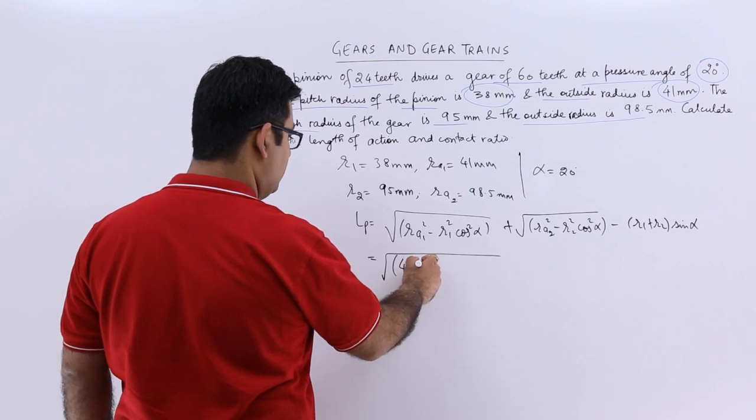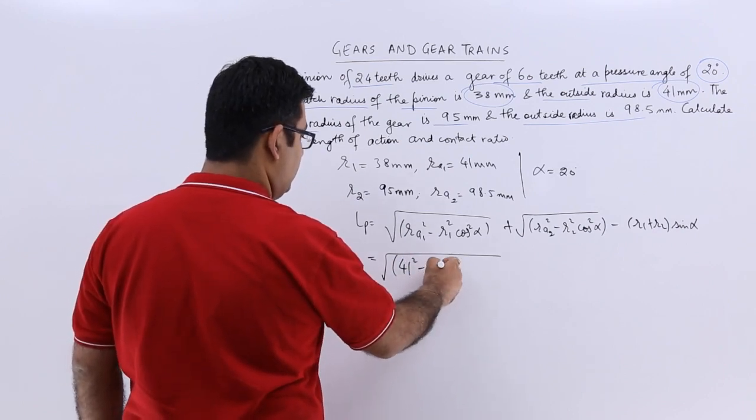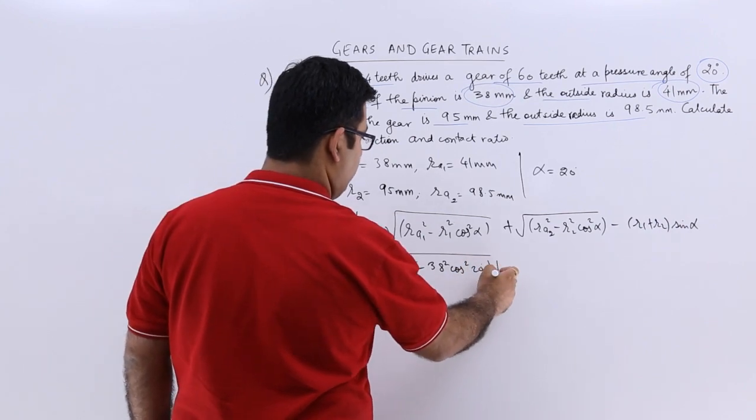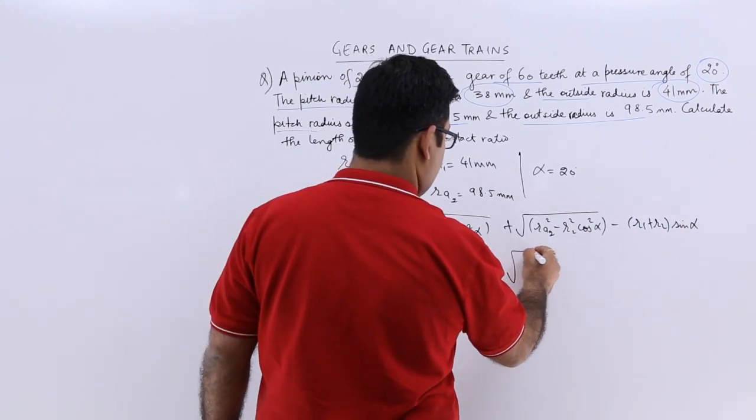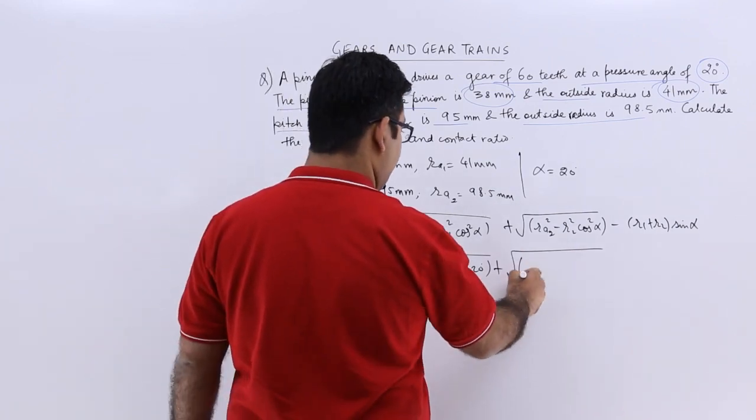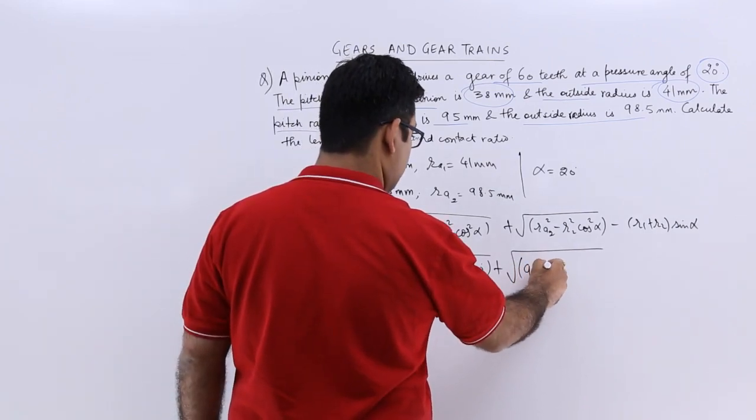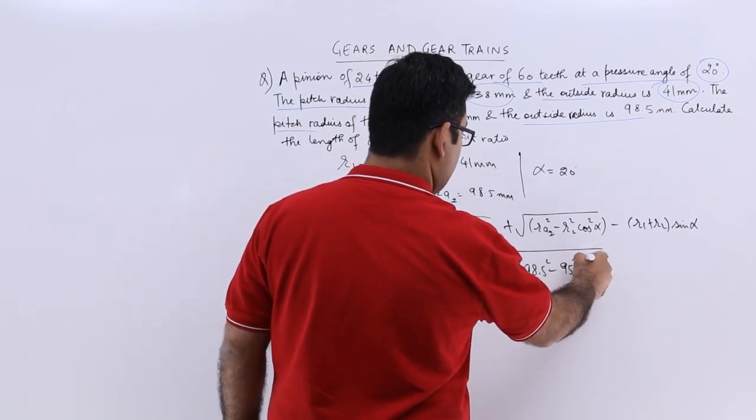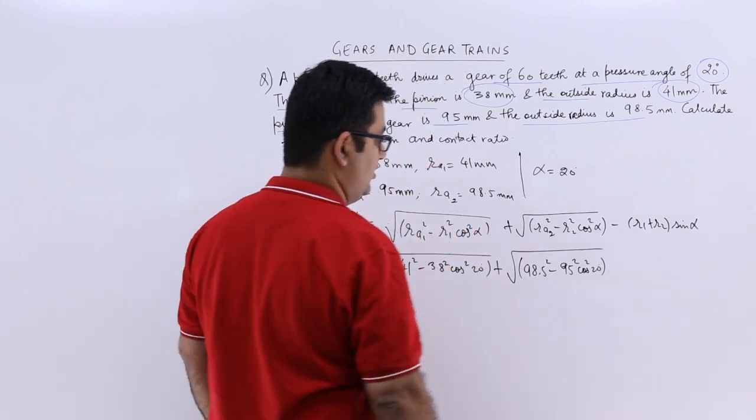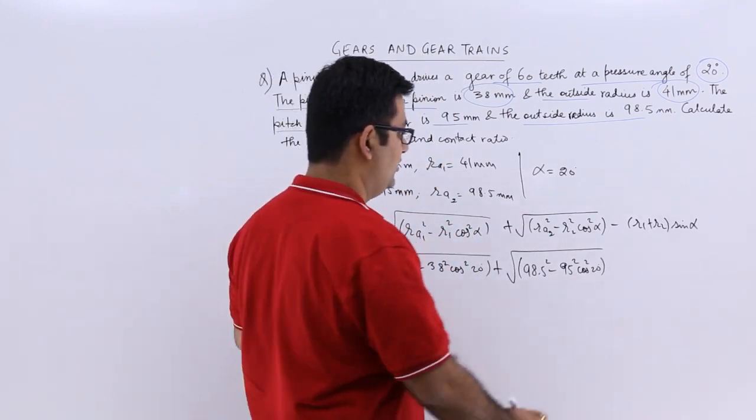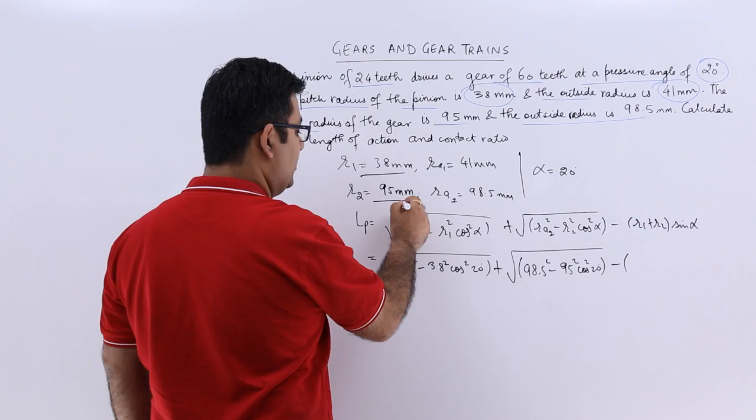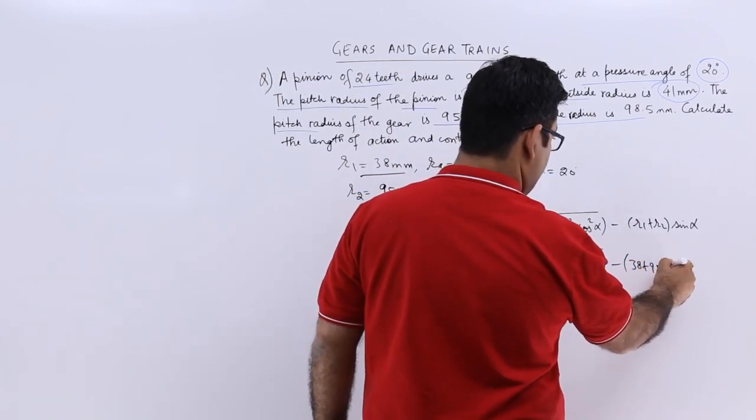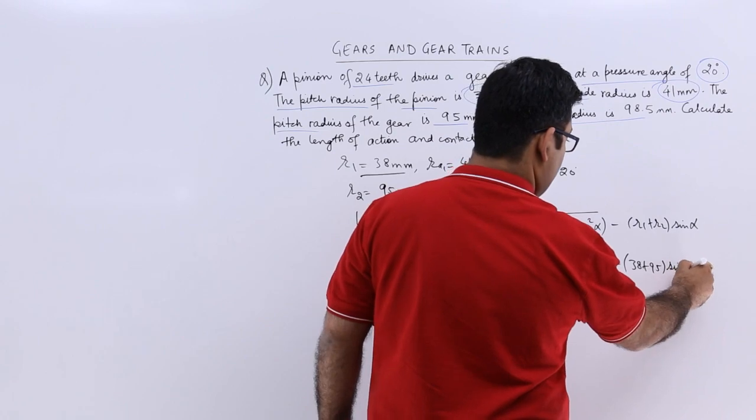You will get 41 square minus 38 square cos square 20 plus under root 98.5 square minus 95 square cos square 20, minus 38 plus 95 into sin 20.